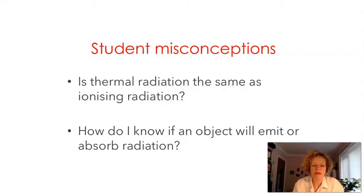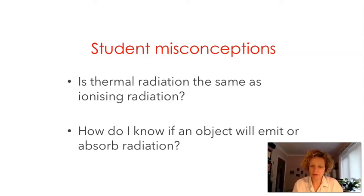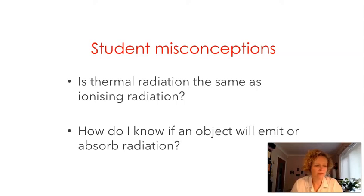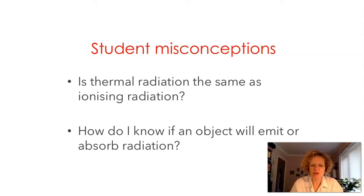Many students find it confusing that we use the term radiation for energy transfer alongside conduction and convection, and also for ionizing radiation or radioactivity. They can also find it difficult that objects which are dark or black are both good at emitting and absorbing radiation.